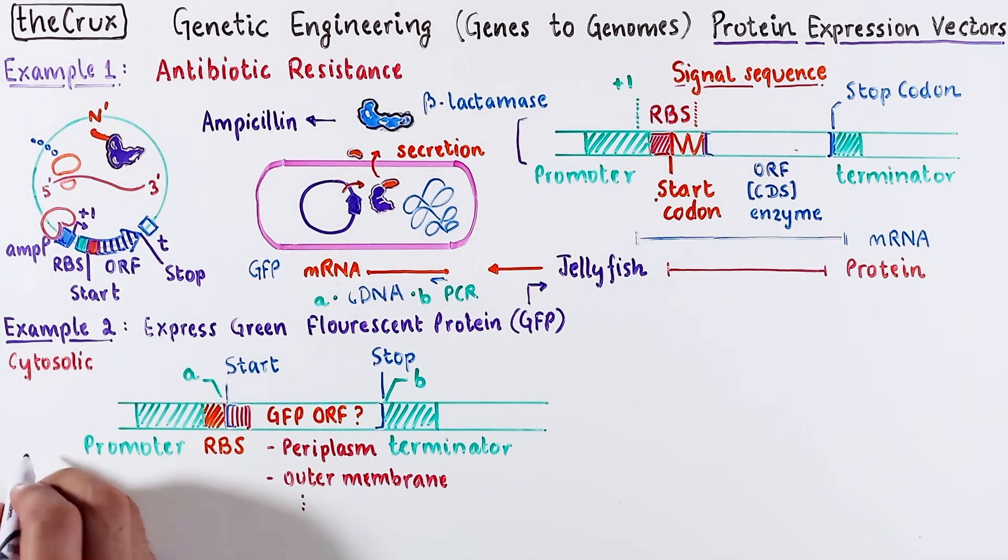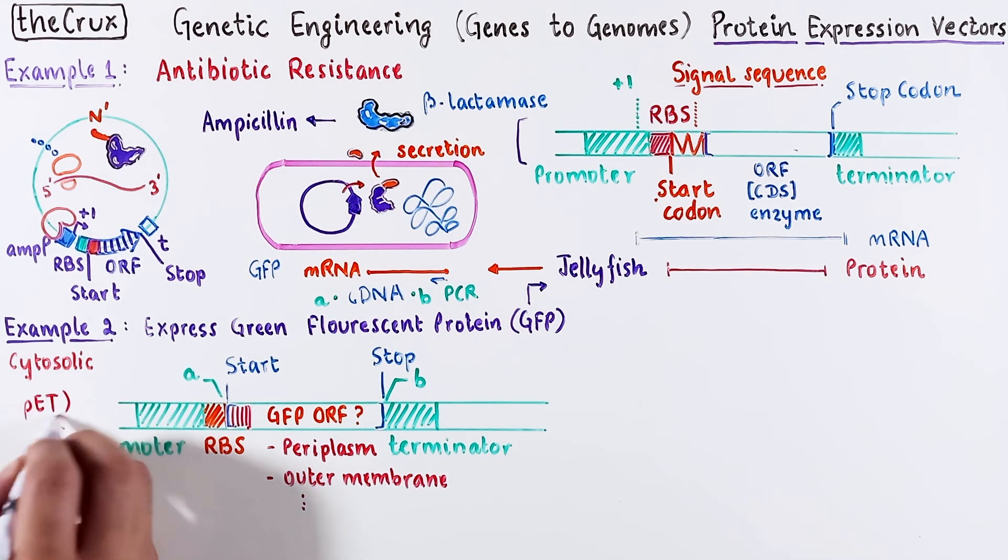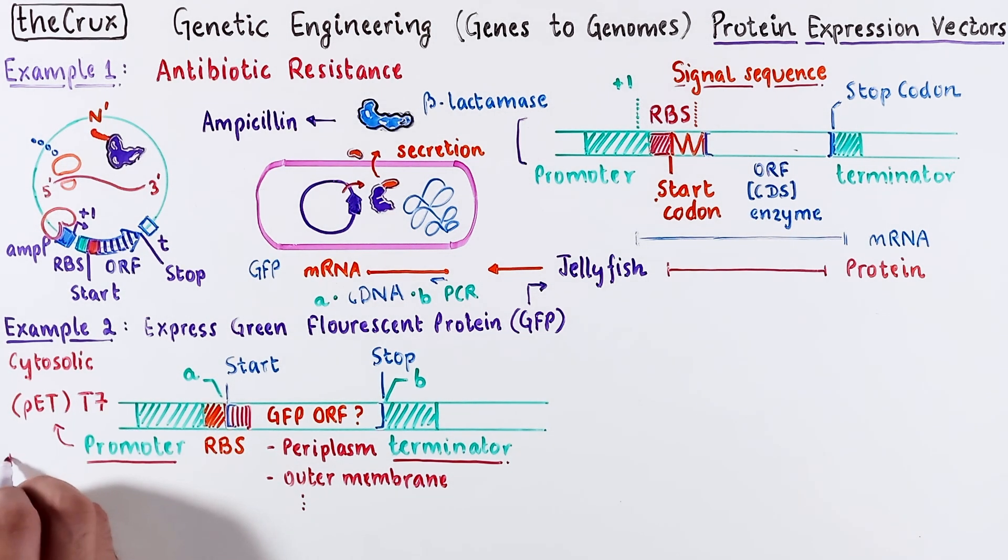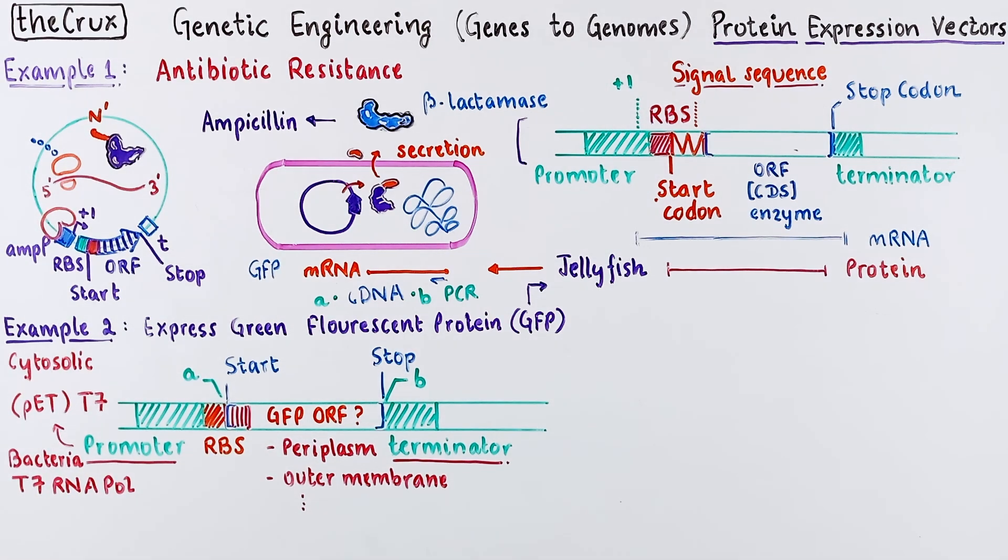For a lot of protein expression vectors, like pets, gems, or jex series, or any expression vectors, you typically don't have to worry about promoters and terminators. You just use the internal sites to clone your insert in front of the promoter. For vectors like PET, the promoter is typically a viral T7 promoter, which is incompatible with bacterial RNA polymerase. For those vectors, you use an engineered bacteria like DE3, which expresses T7 RNA polymerase.